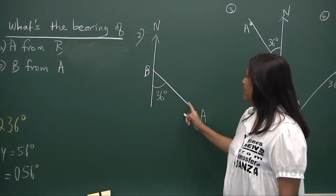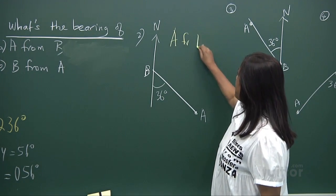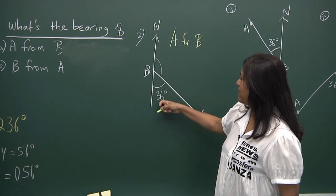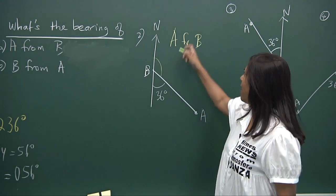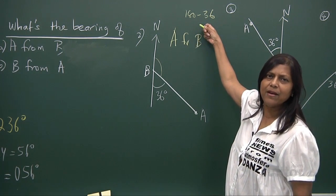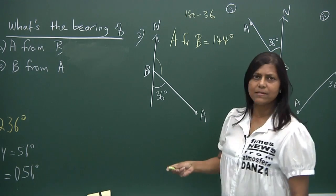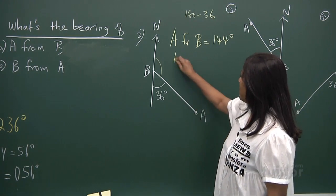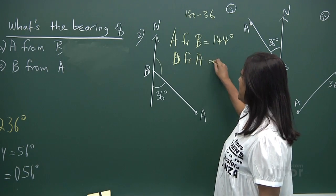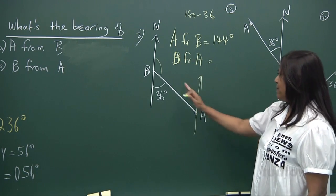What is the bearing of A from B? The starting point is B. This angle is on a straight line — 180 minus 36 gives 144 degrees. So the bearing of A from B is 144 degrees. Now what is the bearing of B from A? Draw the north line again from A.